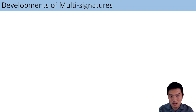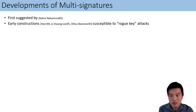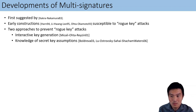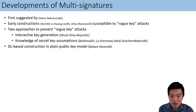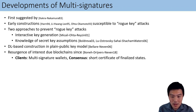Here is a brief timeline of development of multisignatures. It was first suggested almost four years ago. Earlier constructions are susceptible to rogue key attacks — in other words, they are not secure against the notion we just described. There are two approaches to prevent rogue key attacks. The first requires interactive key generation, which does not satisfy the notion we are considering. The second approach is to assume the knowledge of secret key assumption, which requires more complicated key generation algorithms. One canonical scheme achieving this security is a discrete log-based construction, referred to as the Bellare-Neven construction, which serves as a basis for more recent multisignature schemes applied in blockchain settings, including multisignature wallets and short certificates of finalized states. Bitcoin has also recently adopted short signatures.